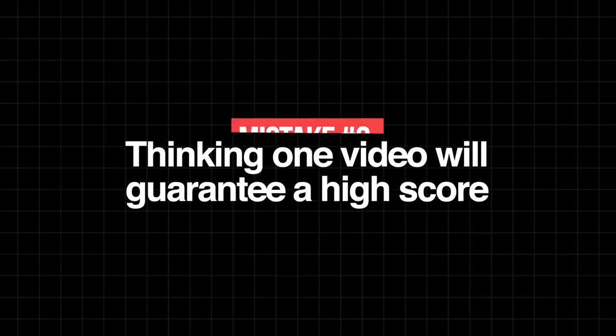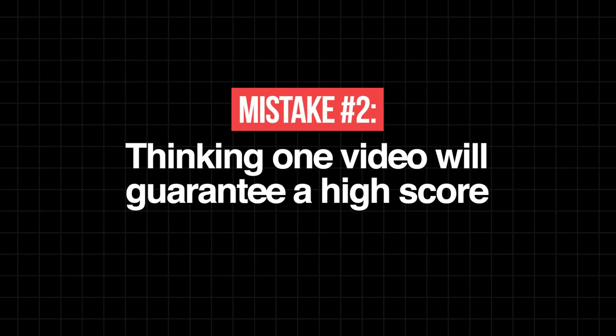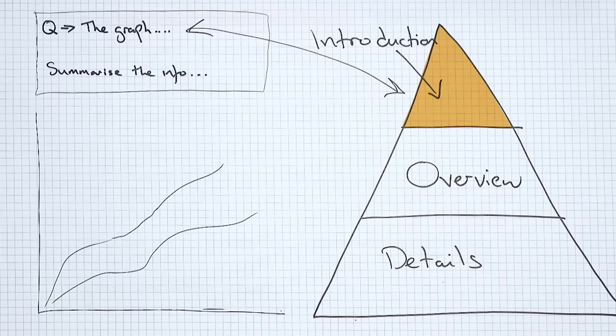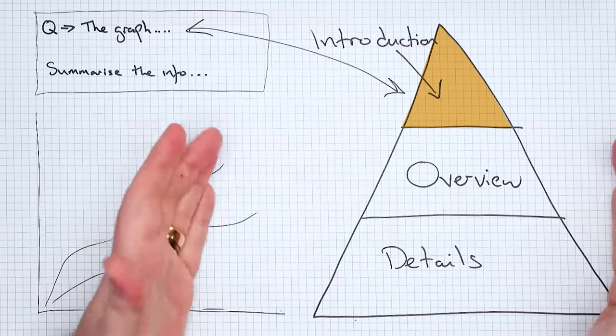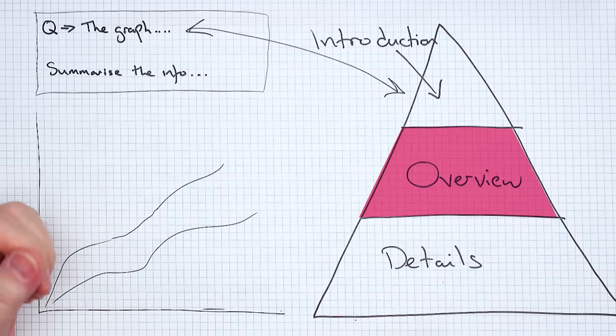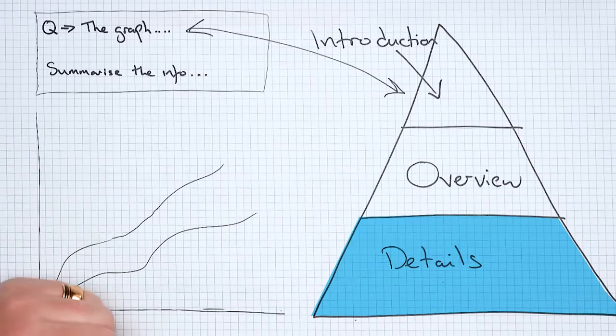That brings me on to the second thing you should never do: watch one video and think it's going to guarantee a high score. Remember at the beginning of the lesson I showed you that your introduction is just a small part of your overall Task 1 report. You need to learn how to write an overview and details paragraphs. But don't worry — I've created another video for you which is going to help you out with that.